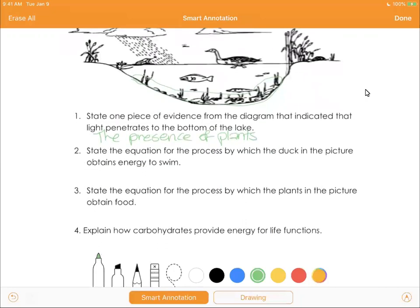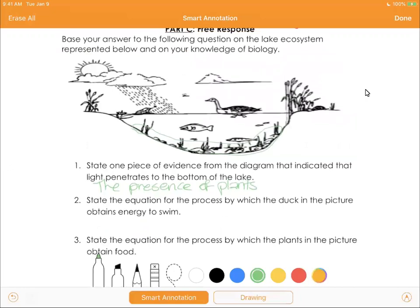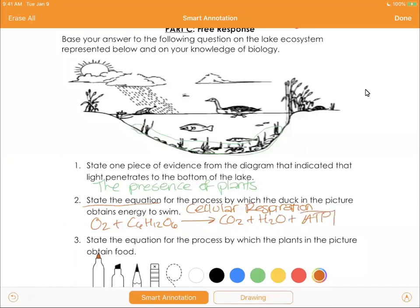The equation for the process by which the duck in the picture obtains energy to swim. So first of all, is a duck a plant or an animal? It's an animal. So it undergoes a certain process in order to get the energy that it needs in order to swim. That process, you should know, occurs in the mitochondria. That process is cellular respiration. But it asks for the equation, so let's give it to them: O2 plus C6H12O6, oxygen plus glucose, yields carbon dioxide plus water plus ATP.